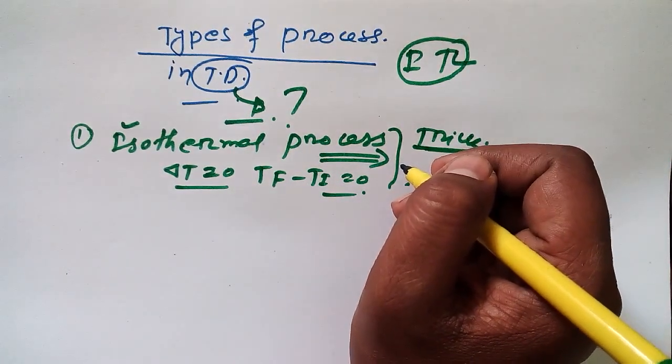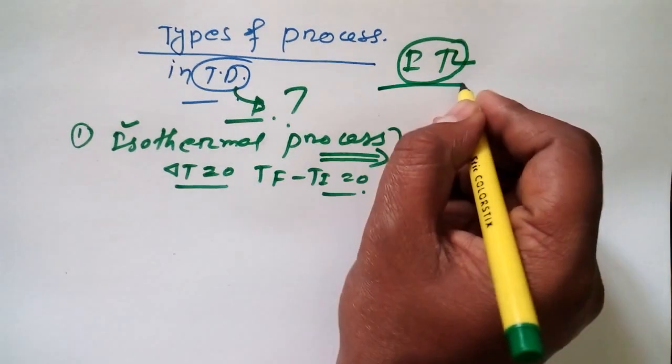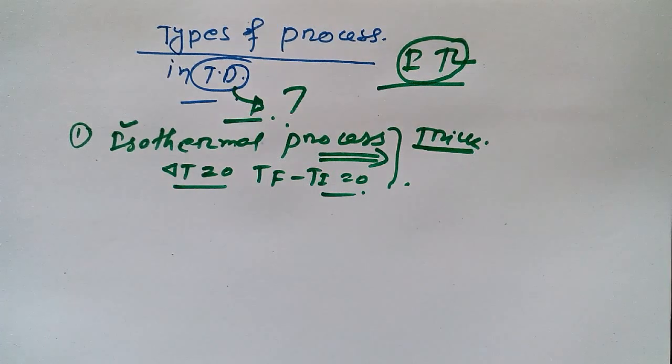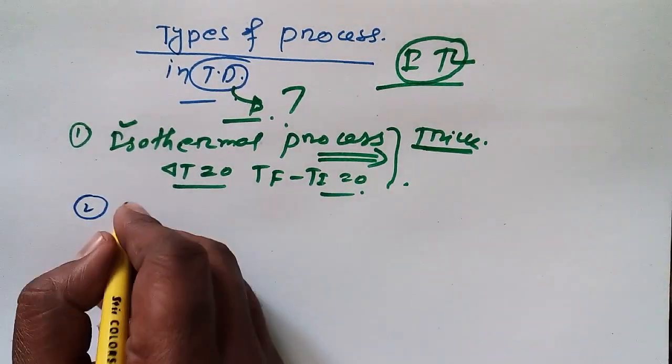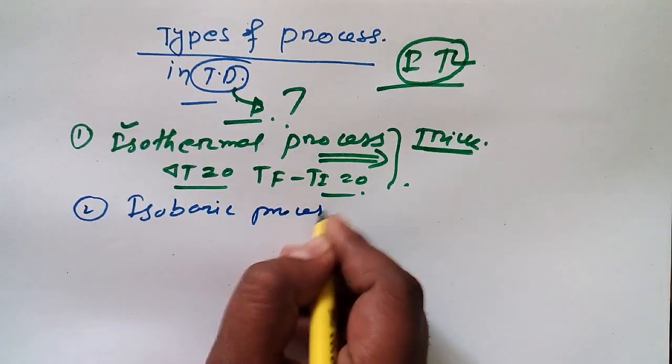So IT means isothermal and T for temperature, and the change in temperature Delta T is equal to zero. This is the way to remember this process. Now second is isobaric process.